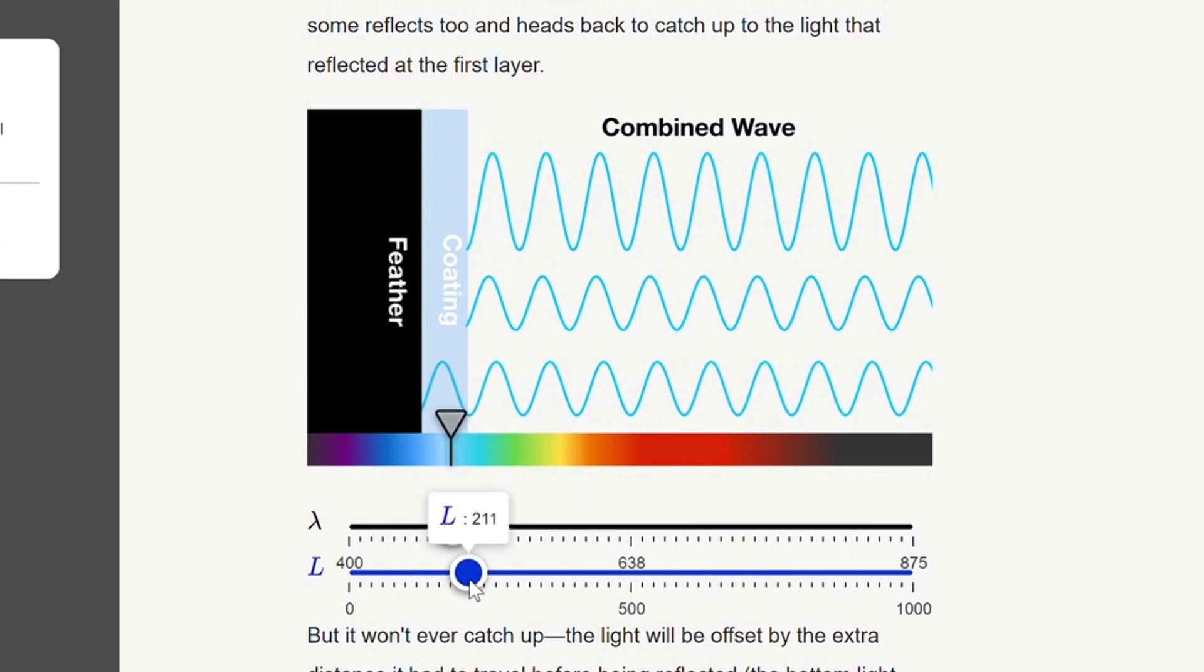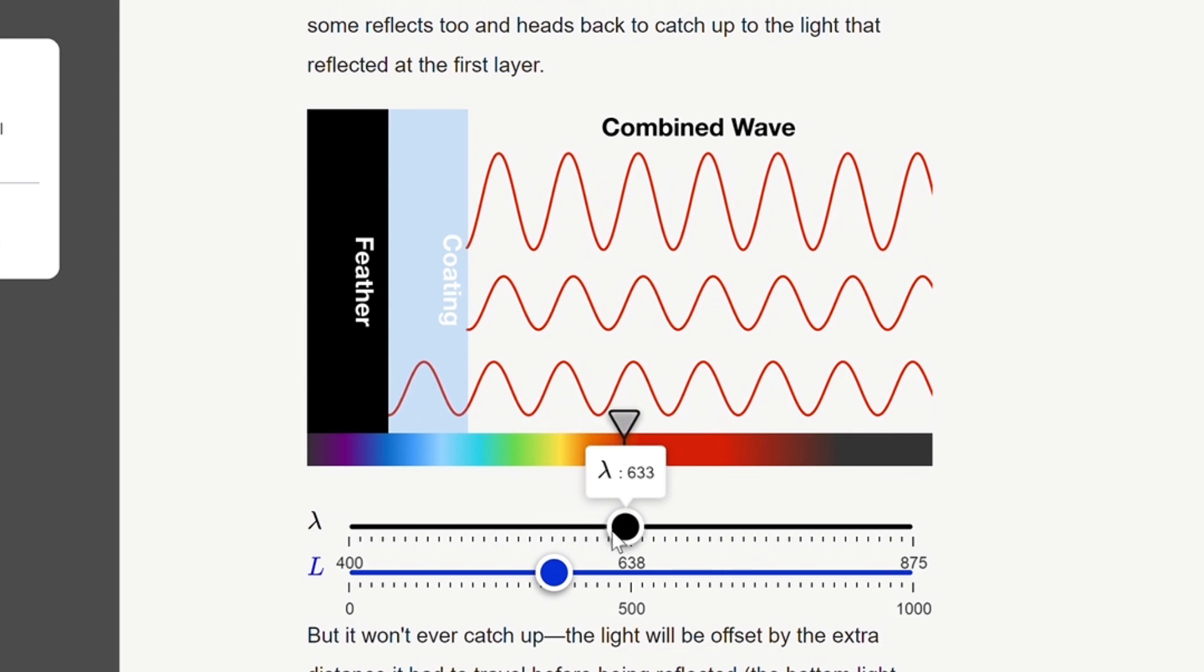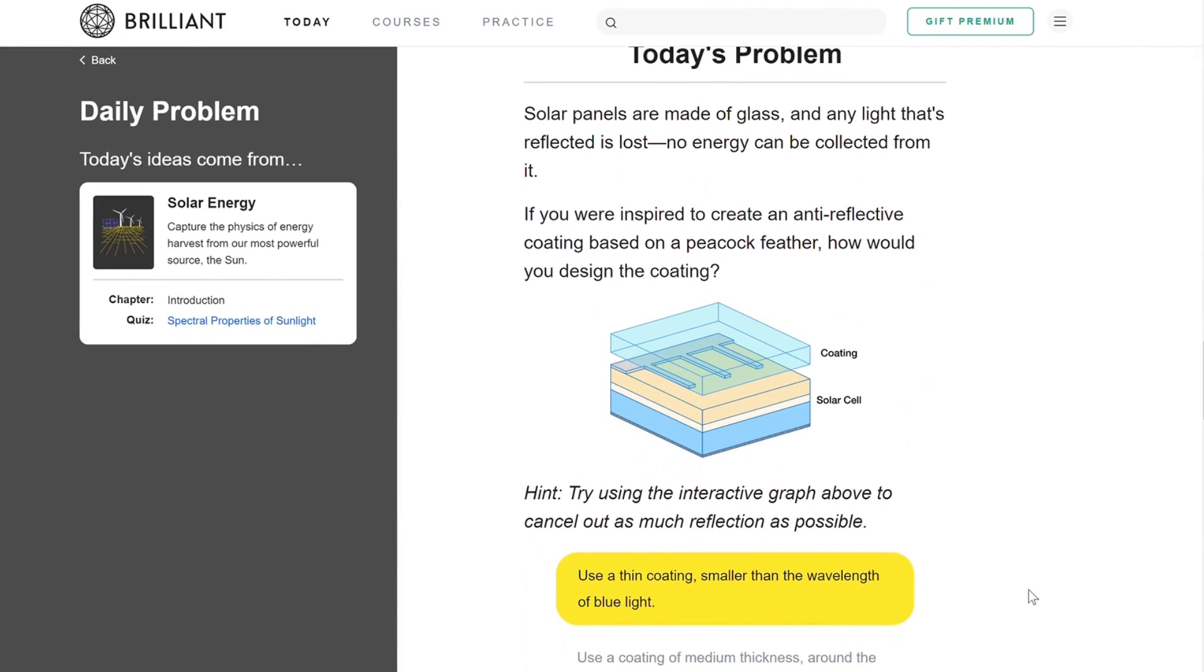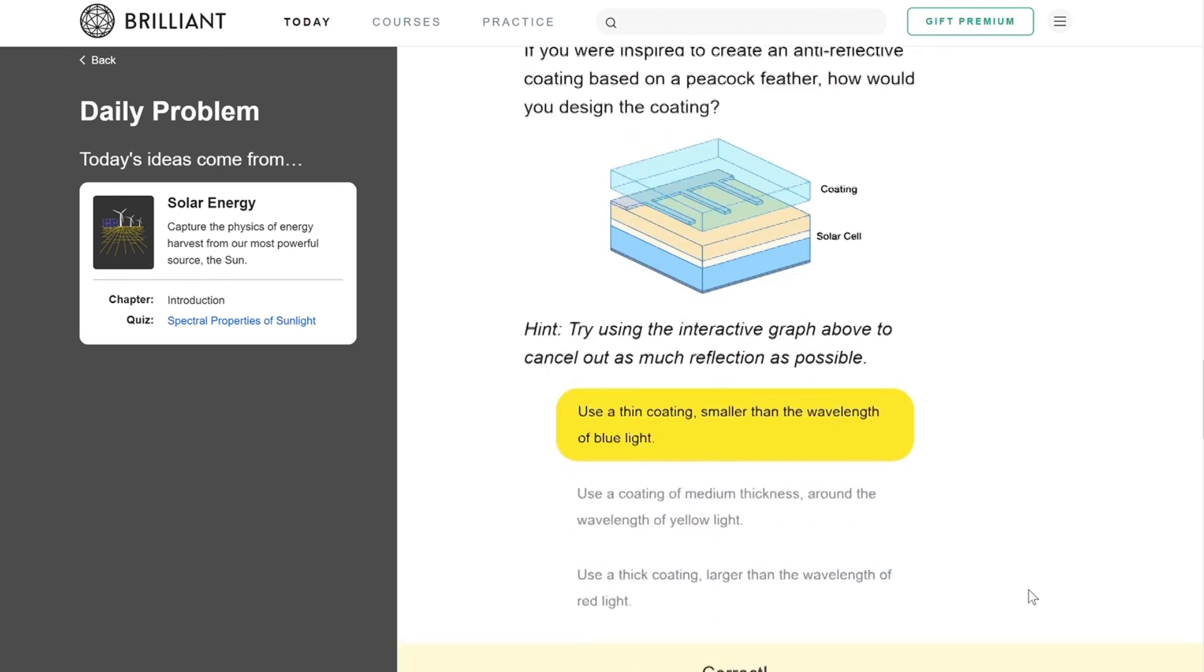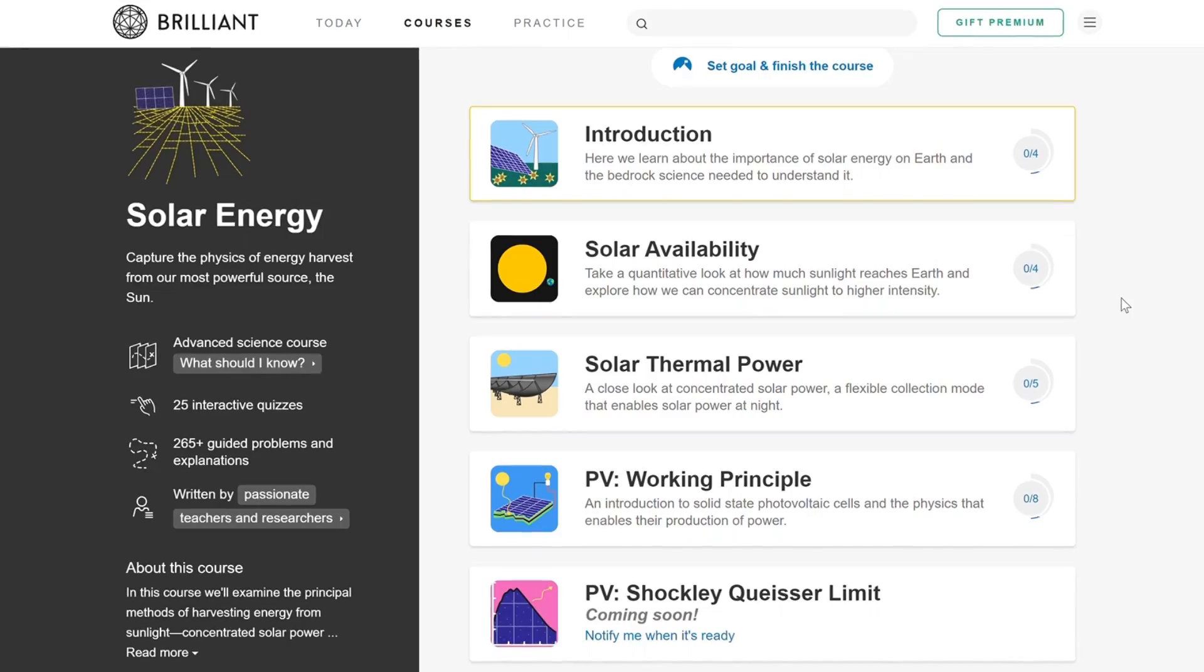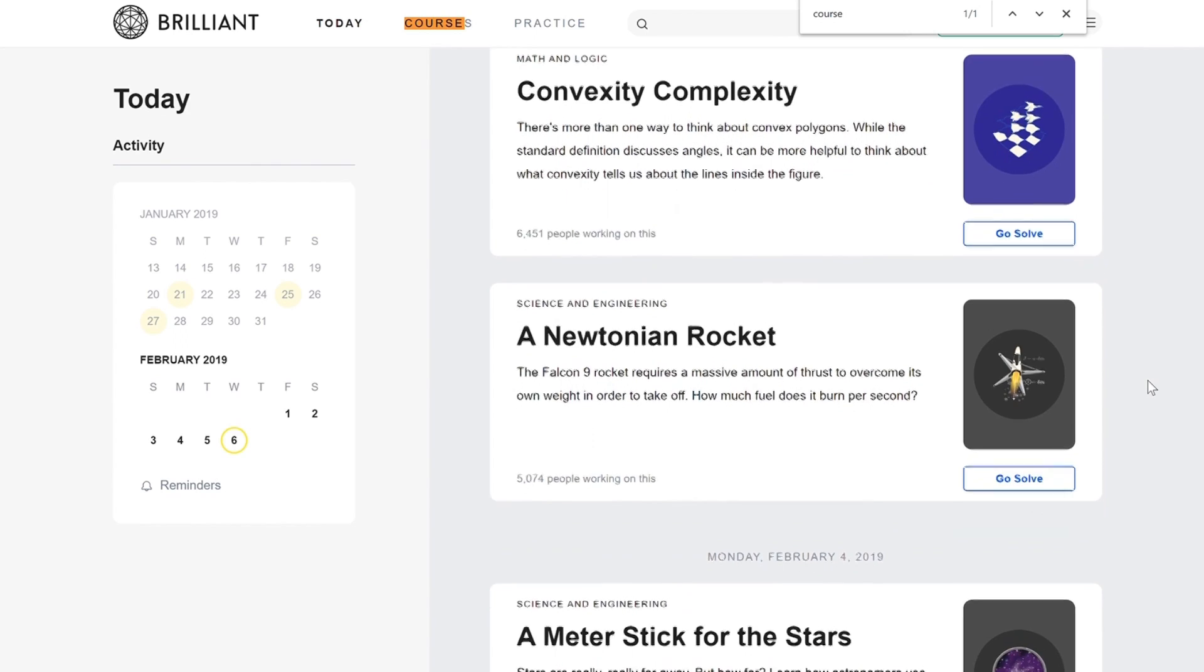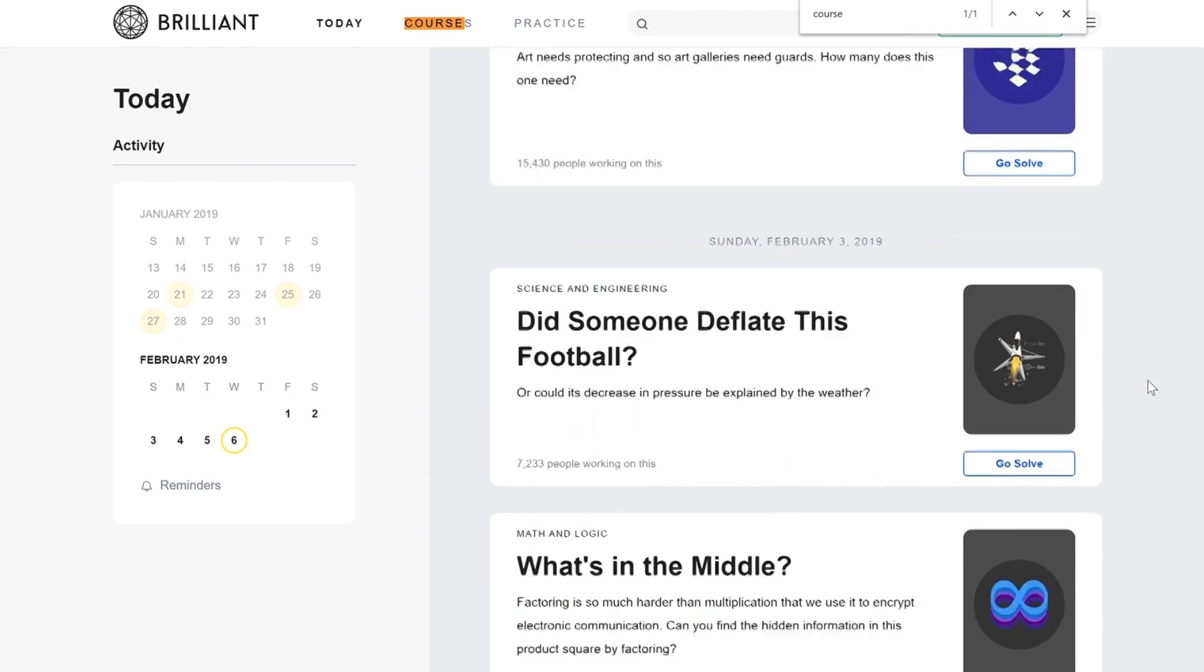This is an interactive cartoon from today's sponsor, brilliant.org. You can adjust the wavelength of light and the thickness of the glass to control which colors are reflected. Then use what you've learned to answer today's problem about creating anti-reflexive coating in a solar panel. If you find that this excites in you a passion for solar energy, you can talk about it with the other engineers discussing the problem or check out a whole course about it. This is just one of Brilliant's daily problems, which range from vector calculus to computational biology to quantum physics. And every problem has an accompanying course to go with it.